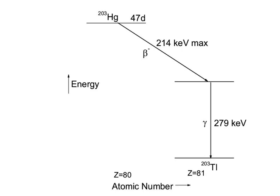As an example, the decay of 203-Hg: the decay scheme shows that 203-Hg produces a continuous beta spectrum with maximum energy 214 keV, that leads to an excited state of the daughter nucleus 203-Tl.